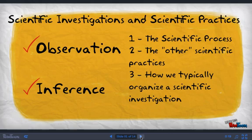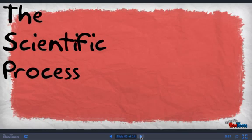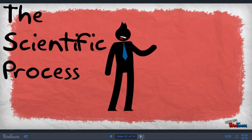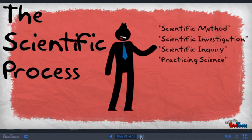Up first, the scientific process, aka the scientific method, a scientific investigation, scientific inquiry, or practicing science, has changed looks many times over the last decade. When I was first taught science, we called it the scientific method. You did science by following the scientific method. It was five steps and it went something like this: question, research, experiment, results, and conclusion.